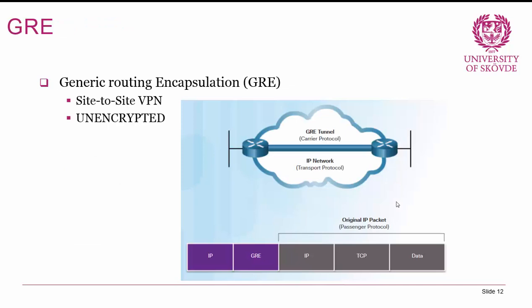Generic Routing Encapsulation, or GRE, is a site-to-site VPN but without privacy since it's totally unencrypted. It connects sites on different parts of the internet and makes them logically directly connected. When you have a tunnel, your original packet has an IP header, TCP header, and data. When using a tunnel, an outer GRE header and a new IP header are placed around the original packet, encapsulating it.